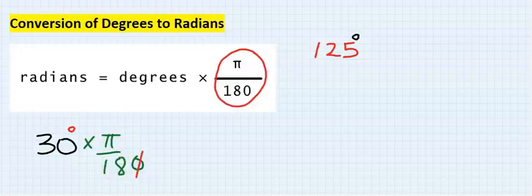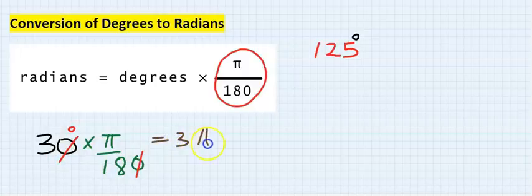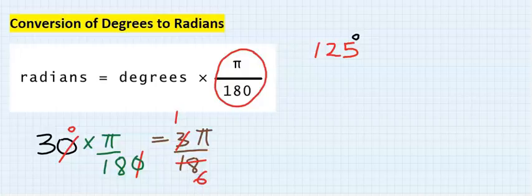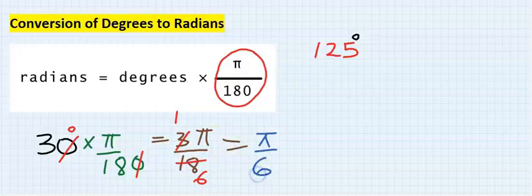Then cancel out whatever is needed and you are left with 3 pi over 18. Something can still cancel out. 3 here is 1 and 3 here is 6, and you are now left with pi over 6 which is your answer.